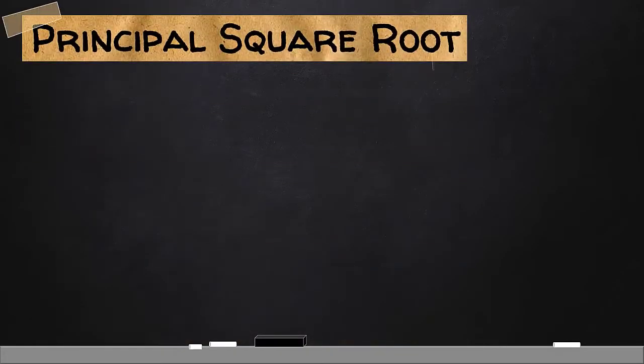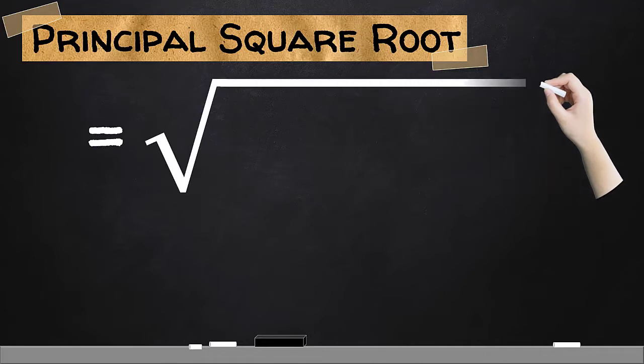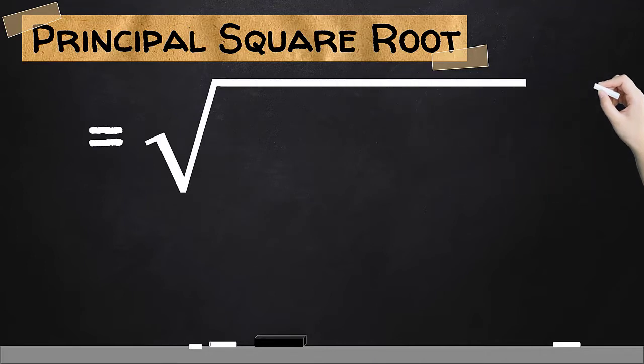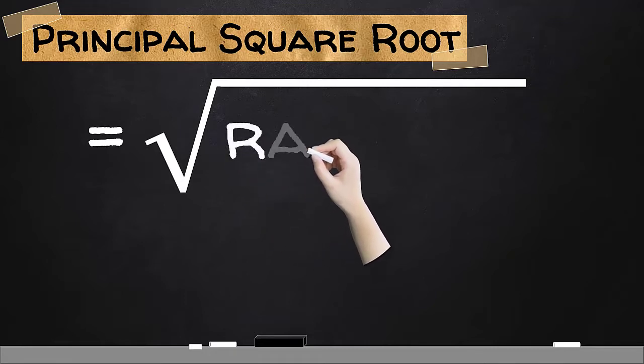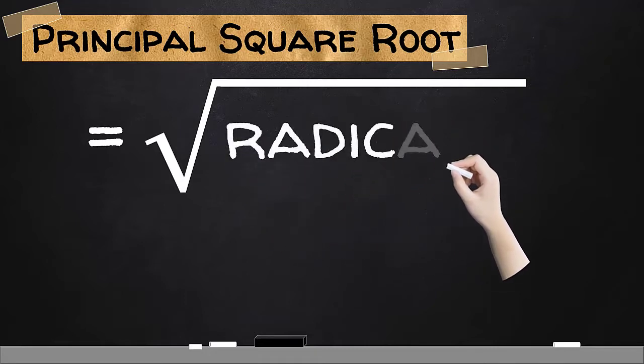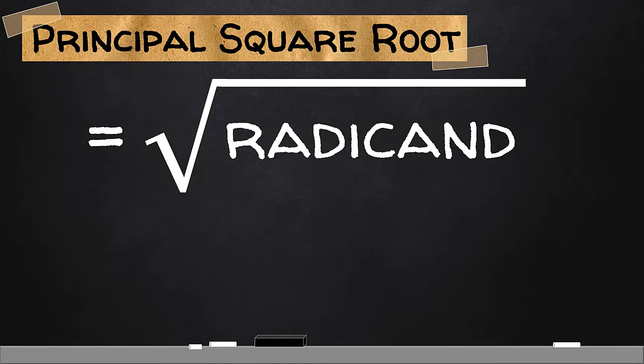If we are going to take the square root of a number, we know that there will be two values. However, if we talk about principal square root, we only refer to the positive result when we take the square root of any expression. We usually have this symbol for the principal square root. Inside the radical symbol is what we call the radicand. The value of the principal square root of any expression depends on the value of the radicand.